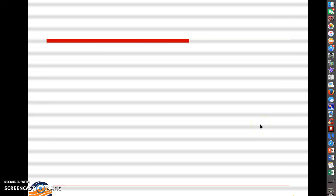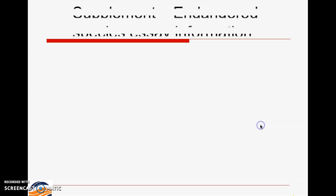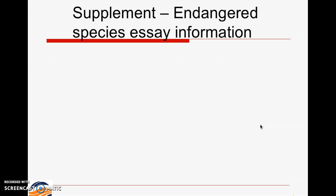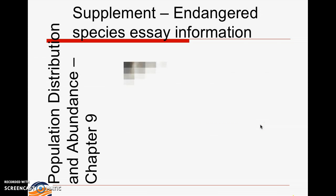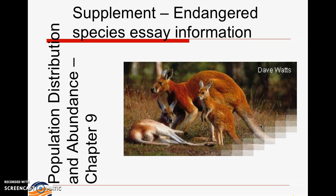This is the Introduction to Ecology, but this is supplemental information for population distribution and abundance in Chapter 9. We're actually looking at the Endangered Species Essay and what sort of things are required for it.